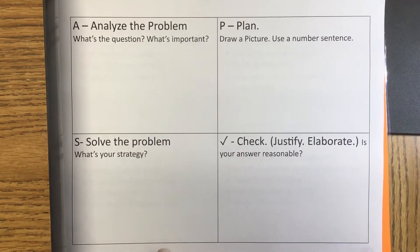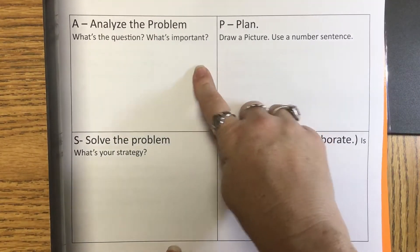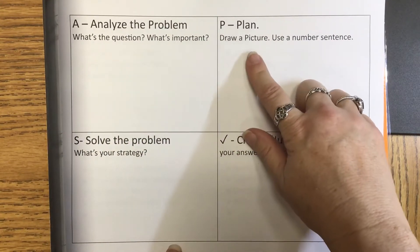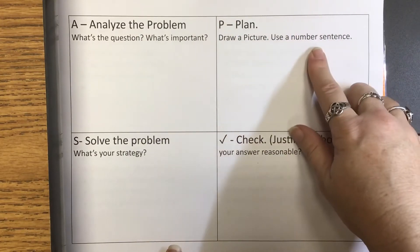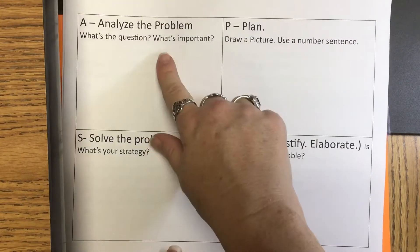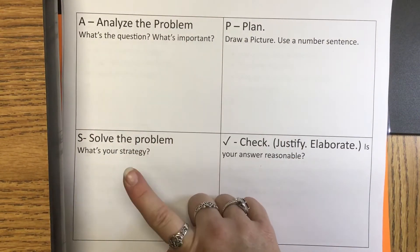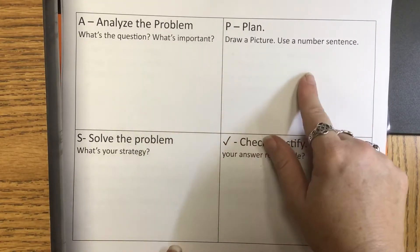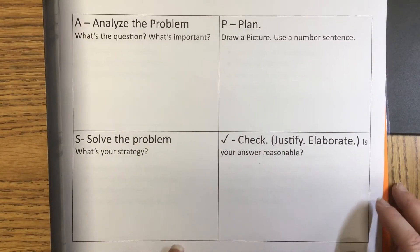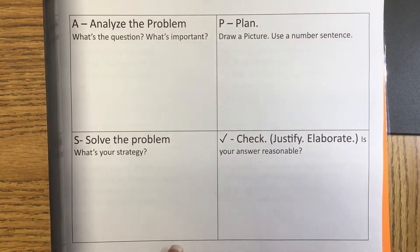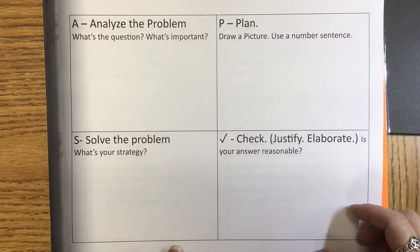We have four steps in solving a problem. We analyze the problem and look at what's the question and what's important. Then we make a plan — usually involving a picture of some kind and a number sentence. Then we solve the problem. What happens is kids tend to read a problem and skip straight to solving — they're going to add, subtract, multiply, or divide — and they skip the analyzing and planning stage. This is why kids sometimes subtract instead of dividing, or add when they should subtract. That's where mistakes get made, so we slow down and use this plan.